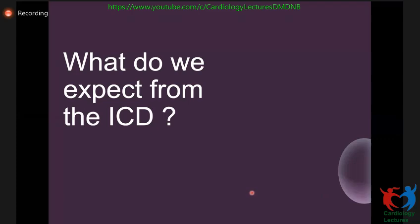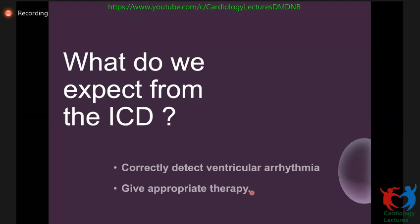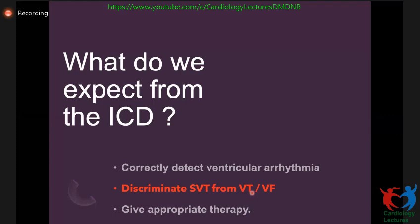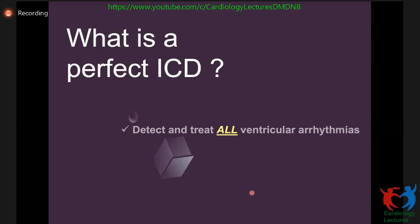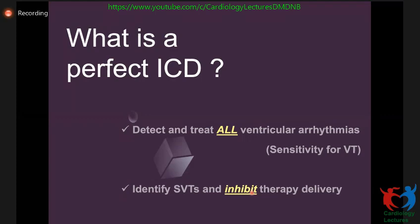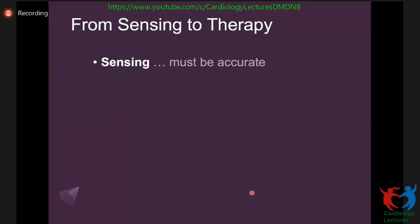What do we expect the ICD to do? We want it to detect ventricular arrhythmia and give appropriate therapies. However, we need to discriminate from SVT because we don't want inappropriate shocks. For the perfect ICD, we aim for detecting all ventricular arrhythmias — meaning the ICD must be very sensitive for VTs — and it should not treat SVT, so it has to inhibit therapy if it's an SVT, requiring specificity for SVT as well.